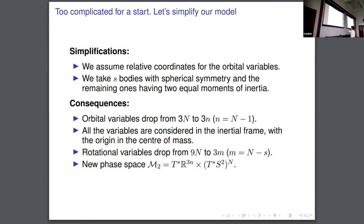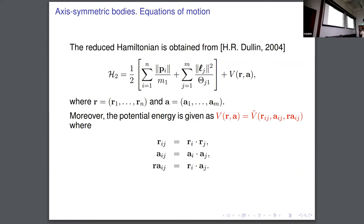The new phase space is described here and, as you can note, the rotational part has a more simplified form. After all those simplifications, the original Hamiltonian that we saw before has this form, and it has the advantages of the Poisson bracket in the body frame. Also there is this coupling term, which is fundamental for the non-integrability of the problem.